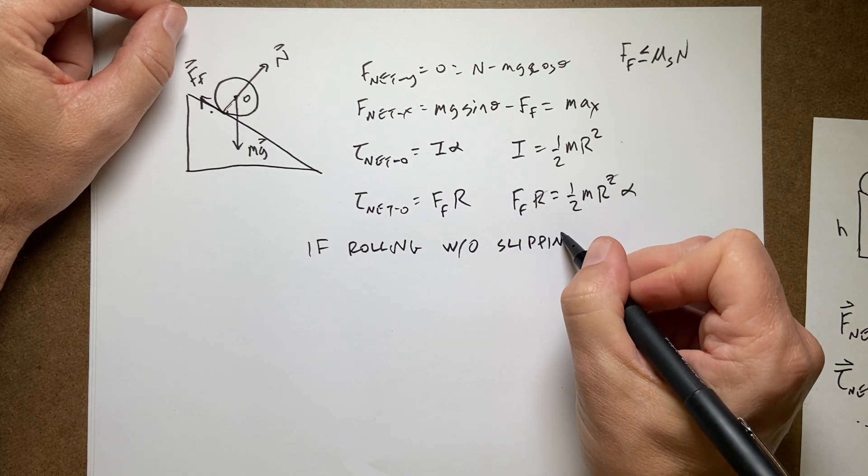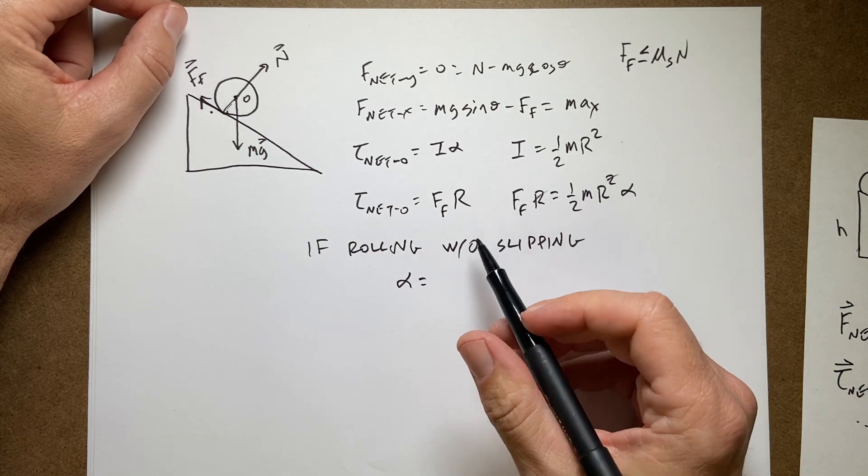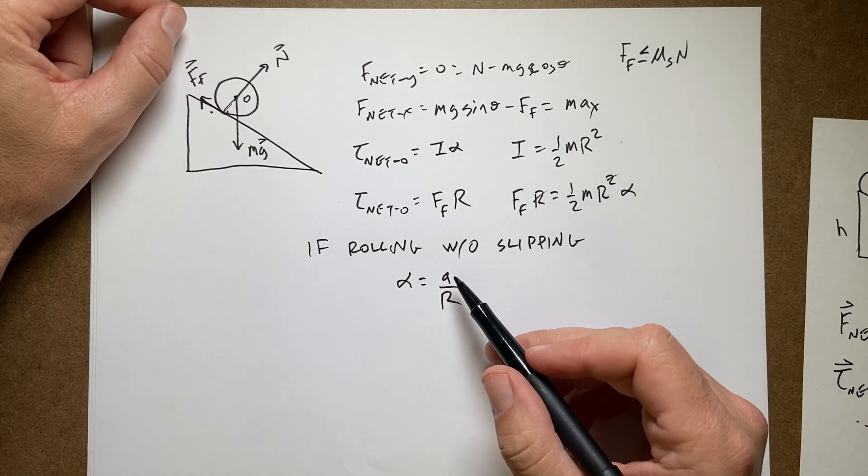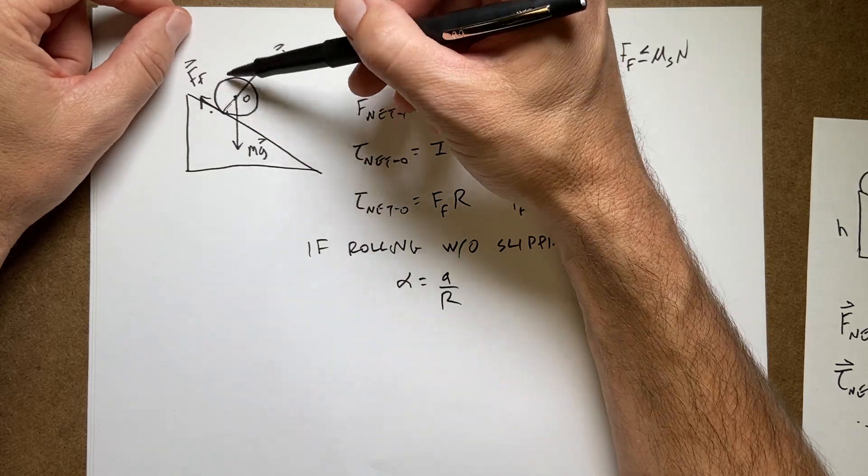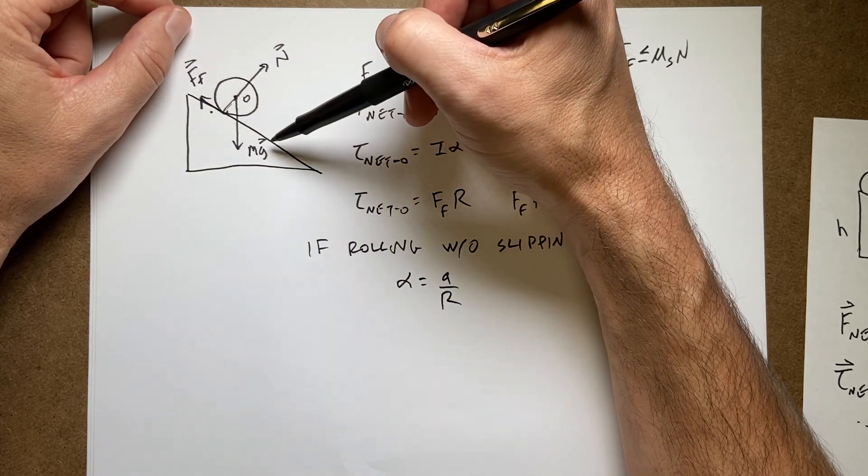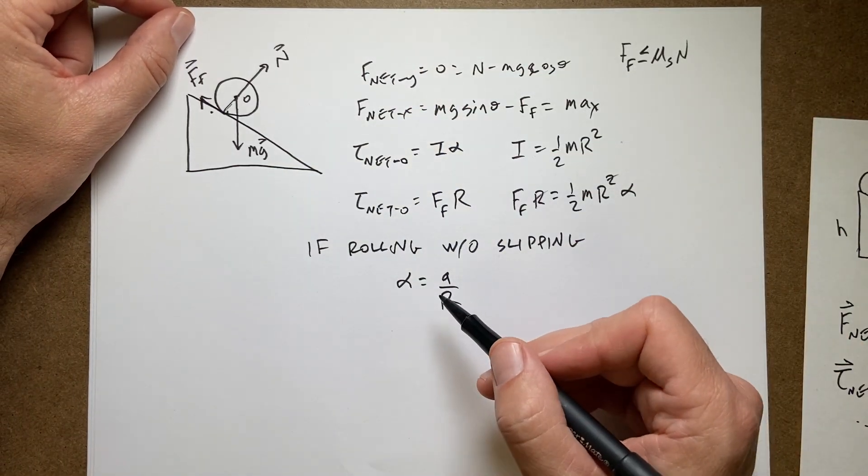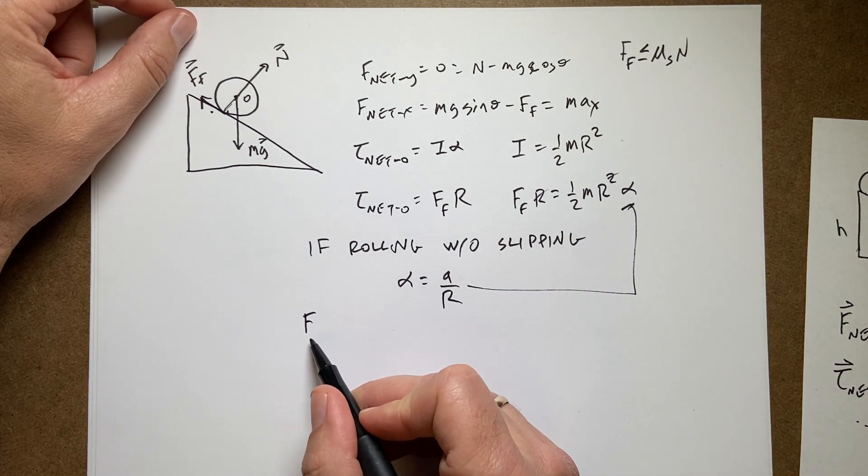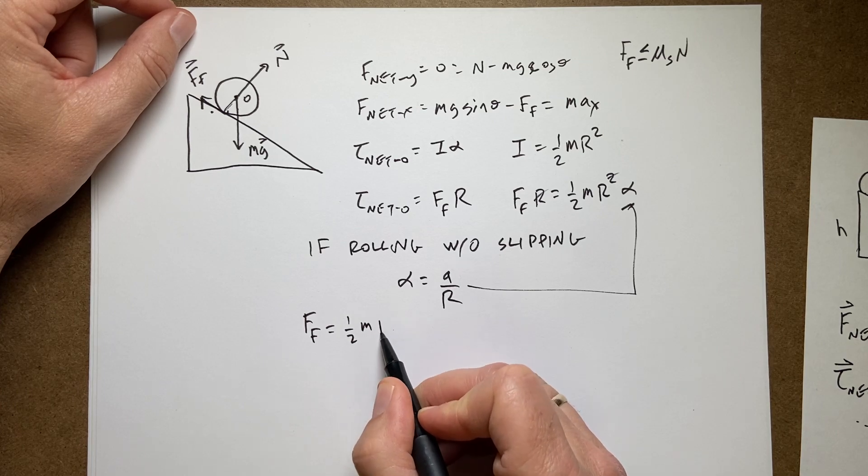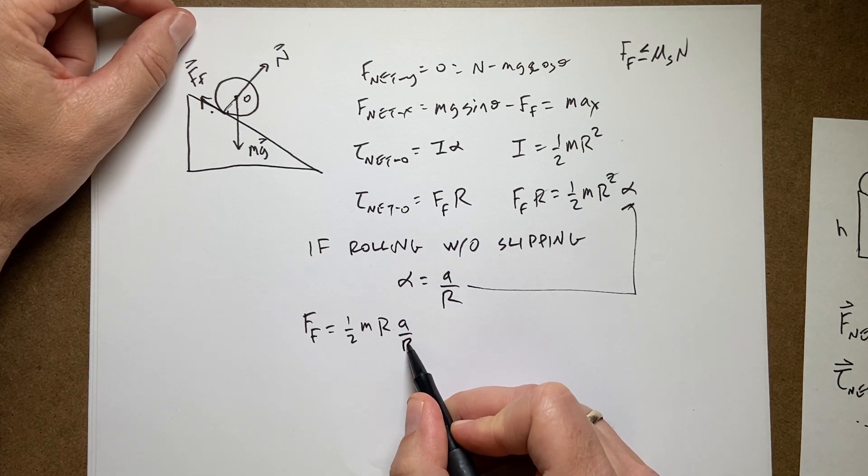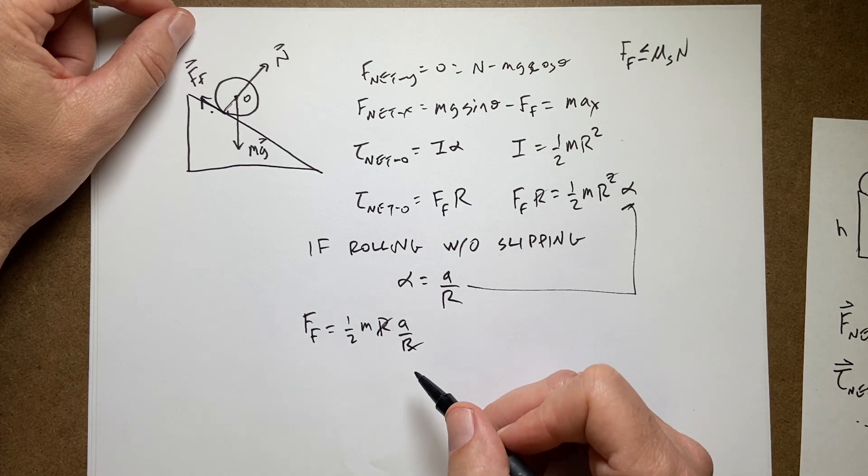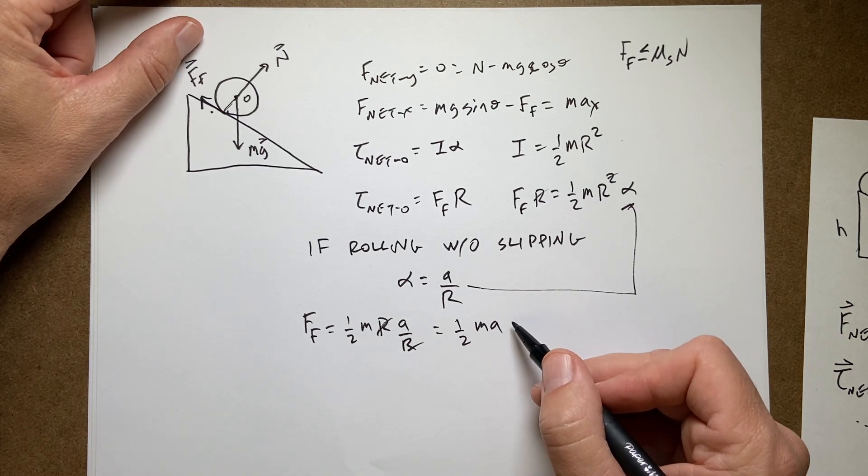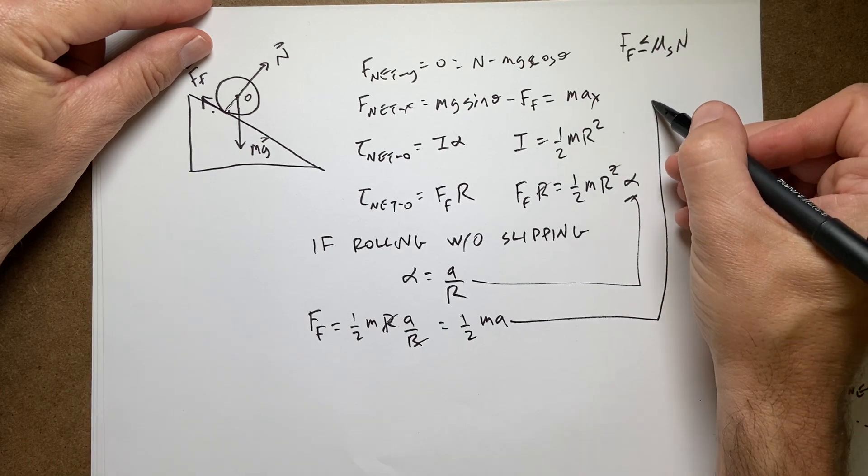If this is rolling without slipping, then alpha is going to be equal to A over R. That has to be true. There has to be a relationship between the angular rotation acceleration and the linear acceleration, otherwise it would slip. Okay, so if I substitute that in and solve for F, I get F friction equals one half M R times A over R. Check that out. R is cancelled. So one half M A. And this is Ax. So now I can substitute this in up here.